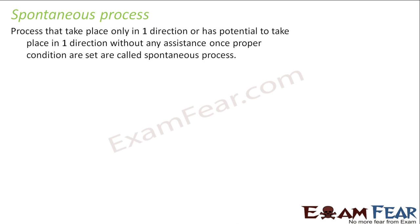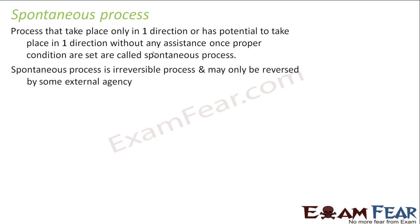Let's understand the spontaneous and non-spontaneous process. The first law is unable to predict whether a process is spontaneous — whether it can happen on its own or not. A spontaneous process is something which takes place only in one direction and has the potential to take place in that one direction without any assistance, given the proper conditions. Also, the spontaneous process is irreversible — if you want to reverse it, you have to apply some external agency.